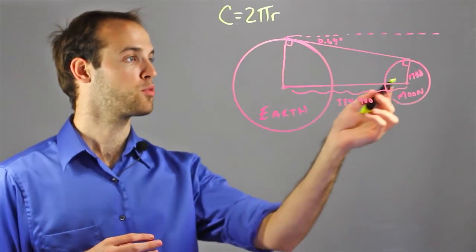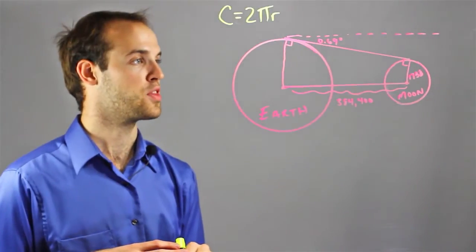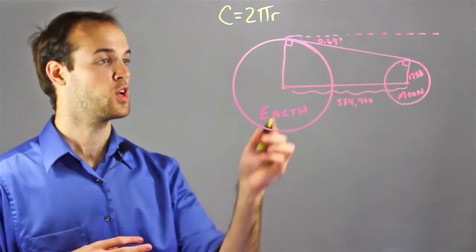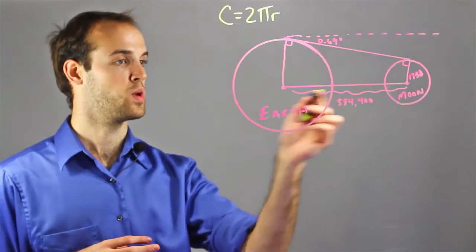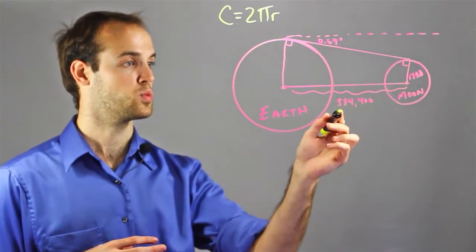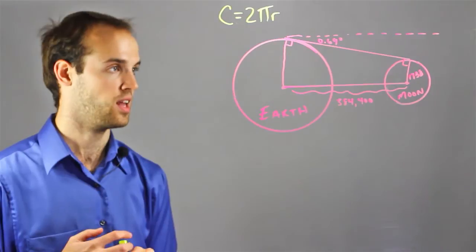So I'm given the radius of the Moon is 1738, and I also know the distance between the Earth and the Moon at their centers, which is 384,400 kilometers.